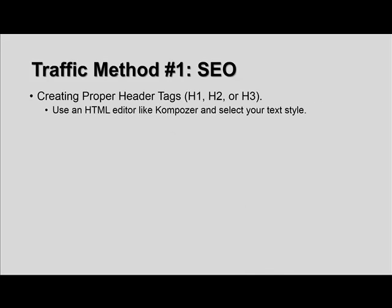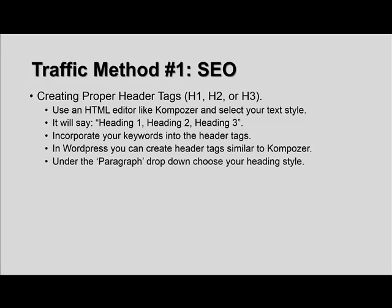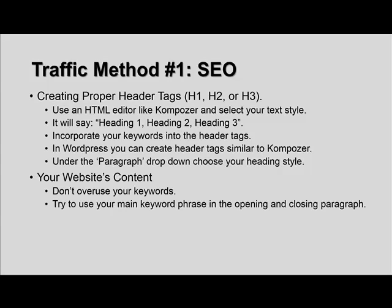You can use an HTML editor like Kompozer to create header tags — select your text and choose heading one, two, or three. In WordPress, use the paragraph dropdown to choose your heading style. For your website's content, do not overuse your keywords. Try to use your main keyword phrase in the opening and closing paragraph, then use it where it makes sense throughout. Don't purposely stuff keywords where they don't flow — if it makes sense, apply it; if not, don't force it.